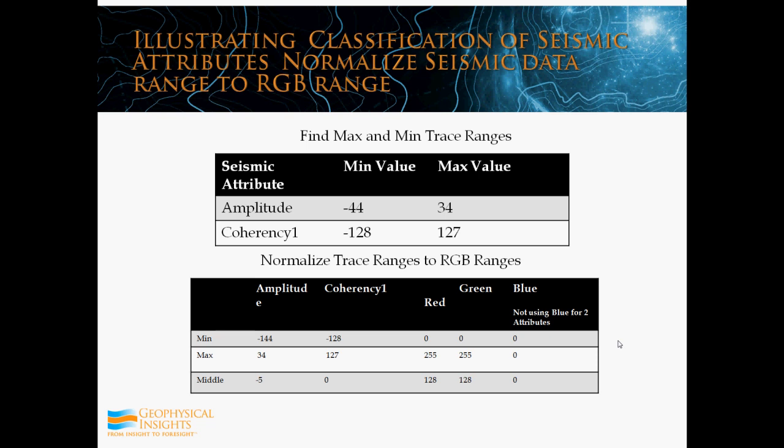Here's the process. I'm going to find the min and max values of a trace range or maybe a volume range. I've got two seismic attribute values — amplitude and coherency — and I know their minimum and maximum values. For example, the amplitude minimum value is negative 44. I'm going to assign that negative 44 to the smallest red value, which is zero. And then I'm going to assign the maximum value, 34, to its maximum red color, which is 255. For coherency, its minimum value is negative 128, so I'll assign that to green of zero, and the maximum value of 127 I'll assign to the maximum green. They'll normalize the amplitude ranges to the color values. And I'm going to ignore the color blue.